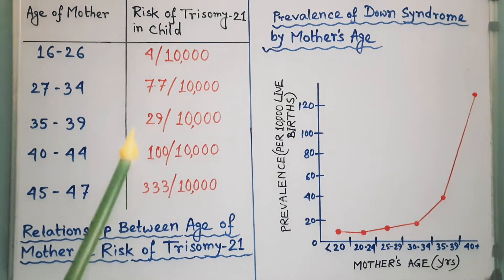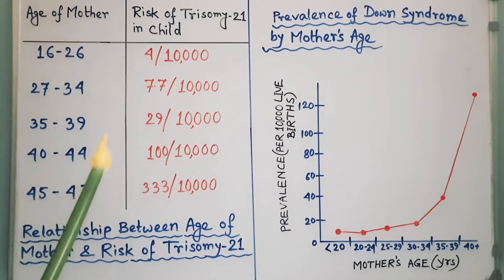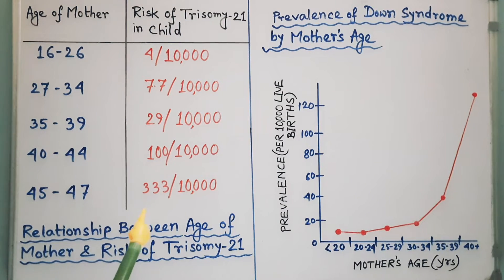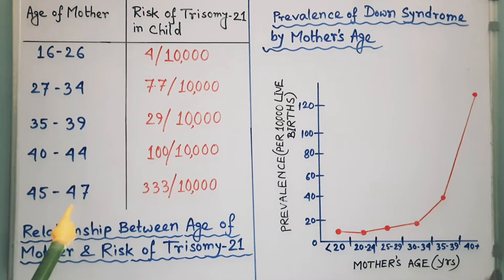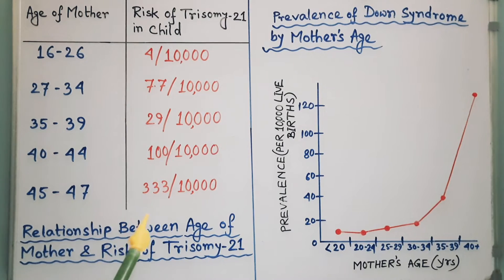So, the statistical data shows that as the mother's age increases, the risk of trisomy 21 or Down syndrome in the child also increases. So, there is a direct relationship between maternal age and probability of giving birth to an individual with trisomy 21 or Down syndrome.